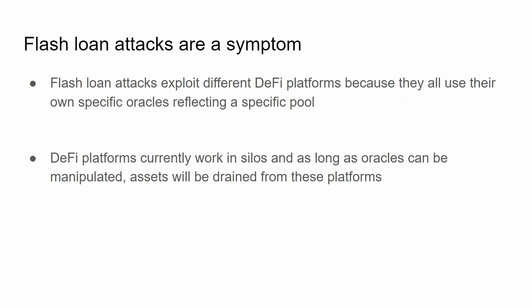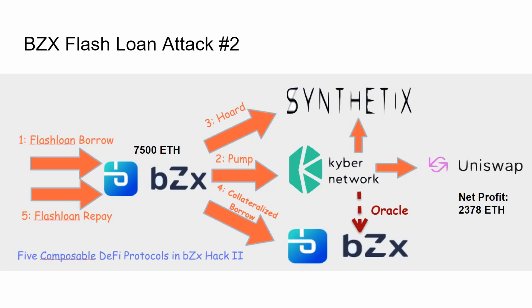As long as DeFi continues to work in silos and the oracles reflect those individual silos, attackers will be able to manipulate the oracles from which smart contracts rely on their data, and that will always be a point of vulnerability for DeFi. The real problem is not that DeFi is inherently bad, but — as seen in attack two — BZX relied on an oracle from one particular network that happened to have low liquidity, so it could be easily manipulated. Flash loan attacks are not a disease of DeFi; they're a symptom of a much more serious disease: the centralized oracle issue.